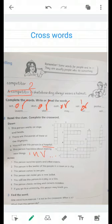Across. This person watches sport and other events. Of course, he is a spectator. Two, this person is the leader of the people in a town or a city. He is the mayor, of course. Number three, this person comes to see you. Of course, he's my visitor, so we write visitor.